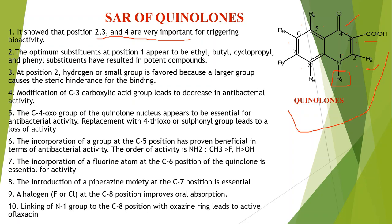Third point: at position 2, hydrogen or a small group is favored because a large group causes steric hindrance for binding. If we take a methyl group or larger at position 2, steric hindrance is created during drug-receptor binding, which causes problems and alters the pharmacokinetic property.